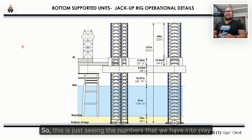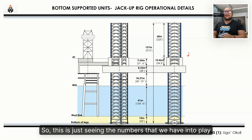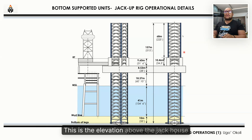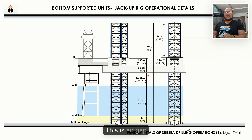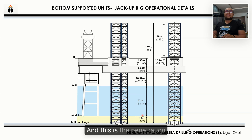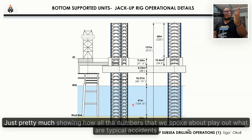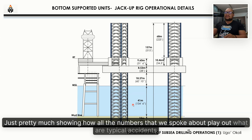A diagram illustrates how all the numerical components play out: the elevation above the jack house, the air gap, the water depth, and the penetration — showing how each variable in the leg length formula contributes to the total required leg length.